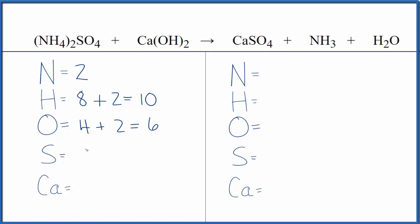On the product side, we have one nitrogen, three hydrogens here plus the two in water, so five hydrogen atoms. We have four oxygens plus one oxygen in water, so five oxygen atoms as well. We have one sulfur and one calcium. You've got to be careful when counting this up to count all the hydrogens and all the oxygens.